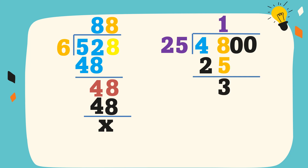Then let's subtract. 8 minus 5 is equal to 3. 4 minus 2 is equal to 2. Then bring down 0.